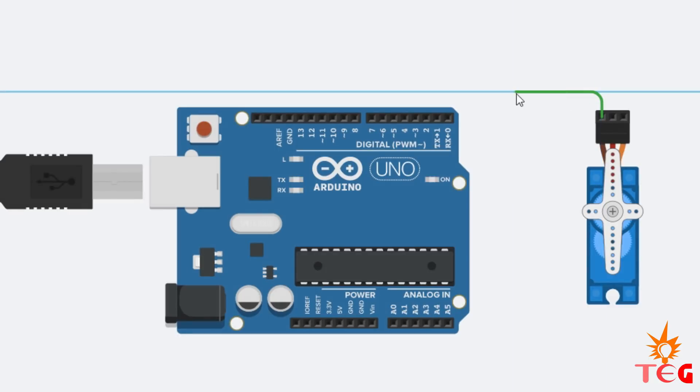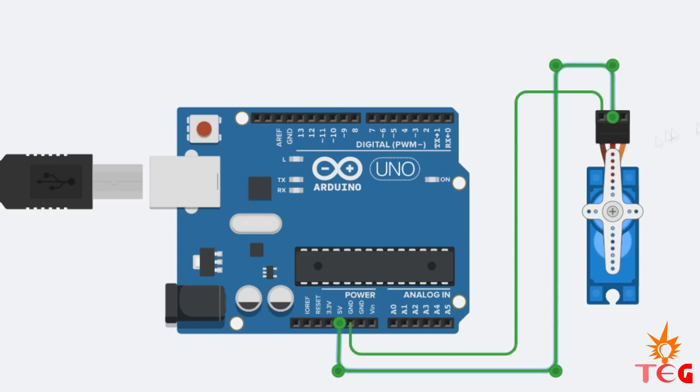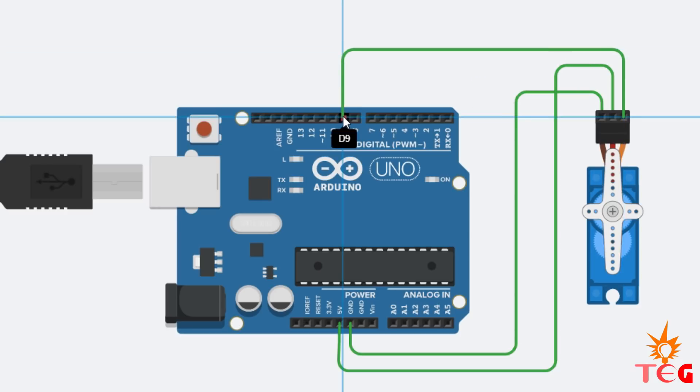Connect the servo motor to Arduino as shown here. Ground pin of servo motor to any ground pin of Arduino. Power pin of servo motor to 5-volt pin of Arduino. And finally, signal pin of servo motor to any digital input-output pin. I'm connecting it to 9th digital input-output pin.